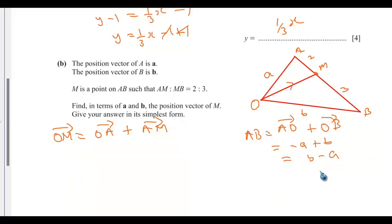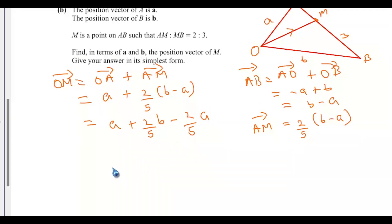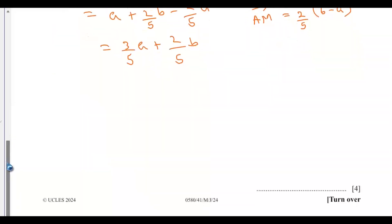So substituting back: OM equals a plus 2/5 of (b minus a). Expanding: a plus 2/5 b minus 2/5 a. Combining the a terms: 1a minus 2/5 a equals 3/5 a. So OM equals 3/5 a plus 2/5 b. This is the simplest form and is the solution.